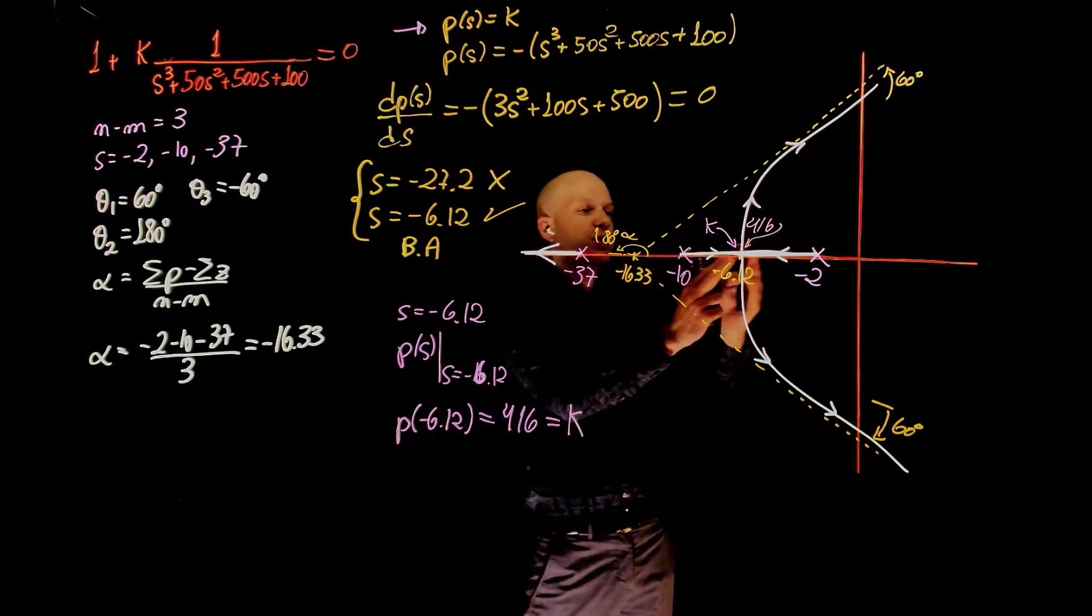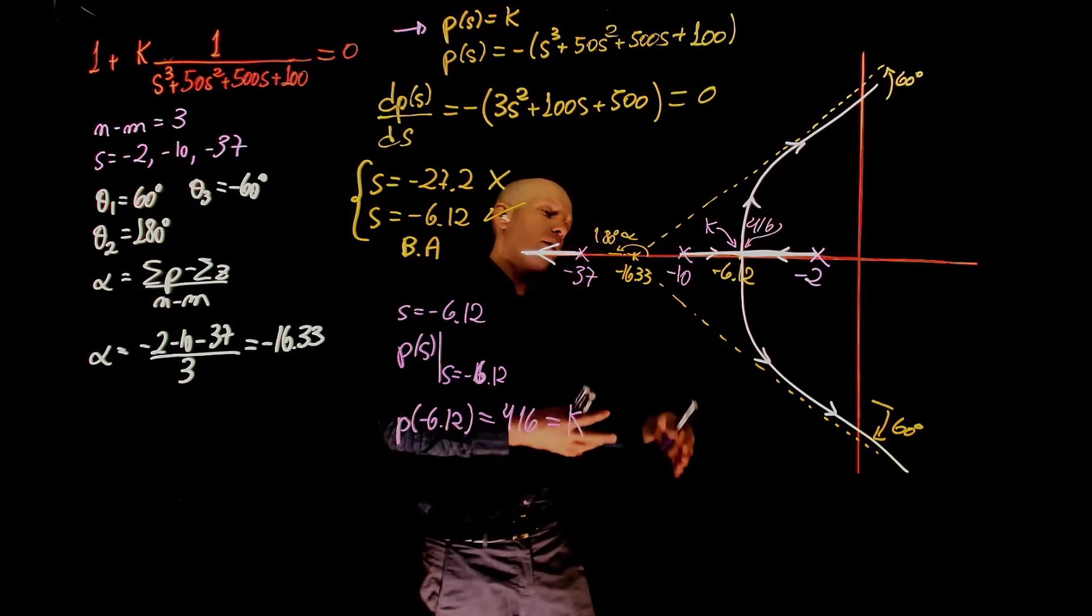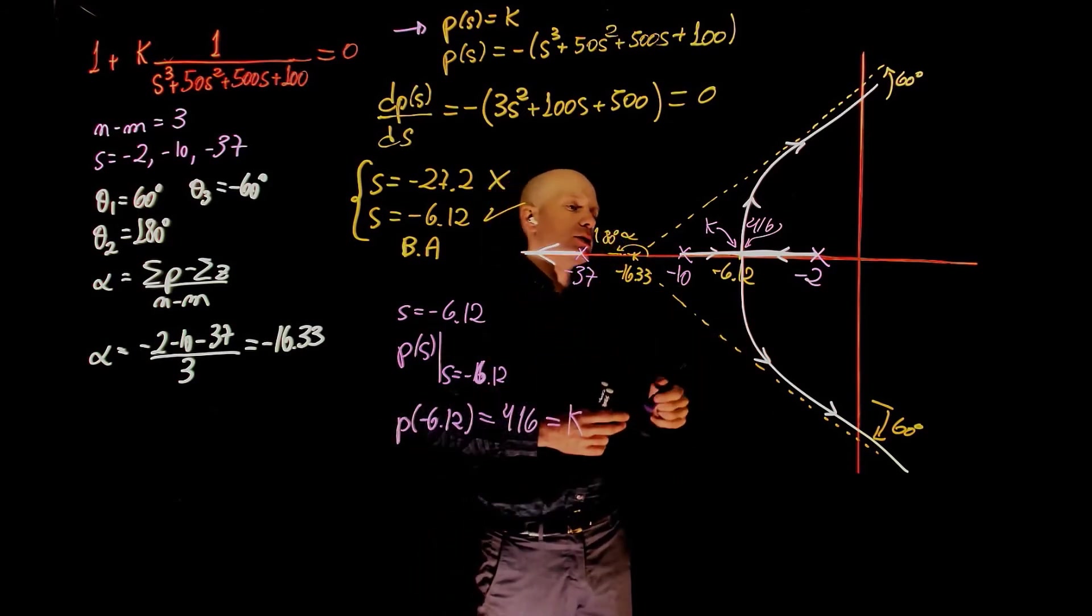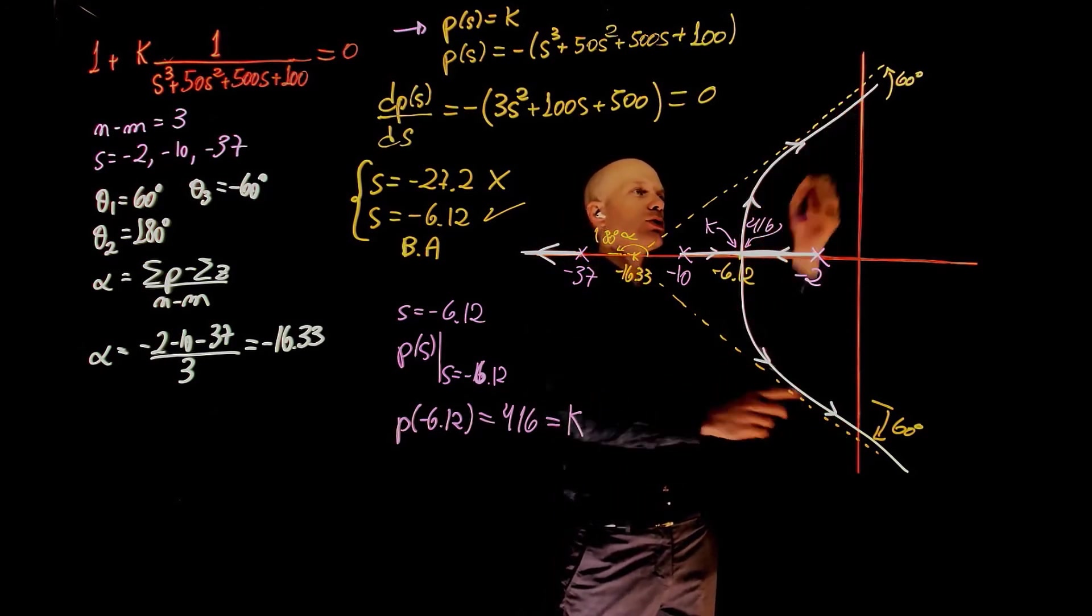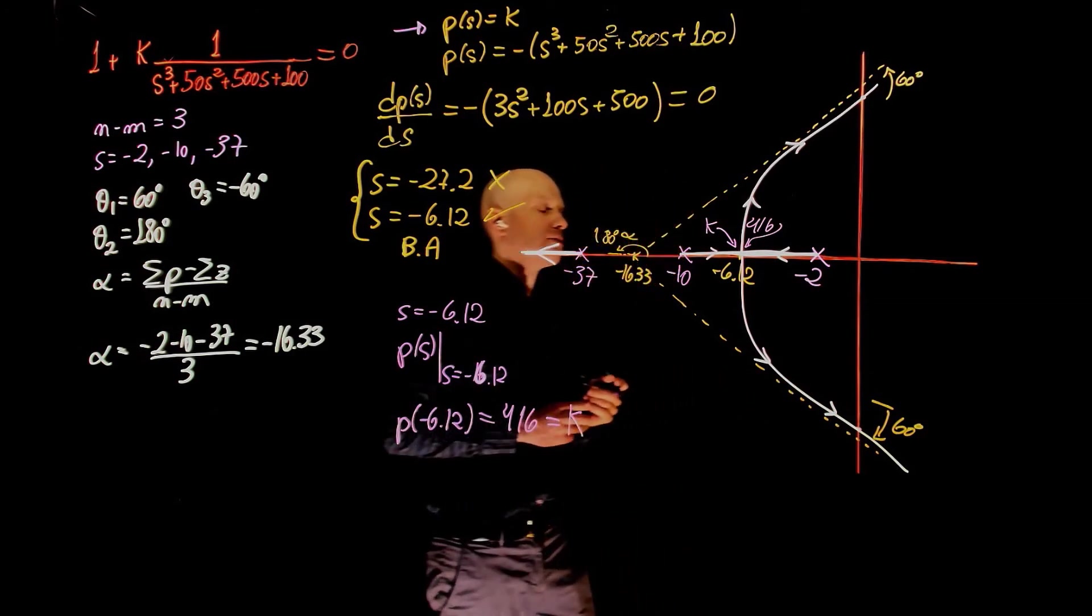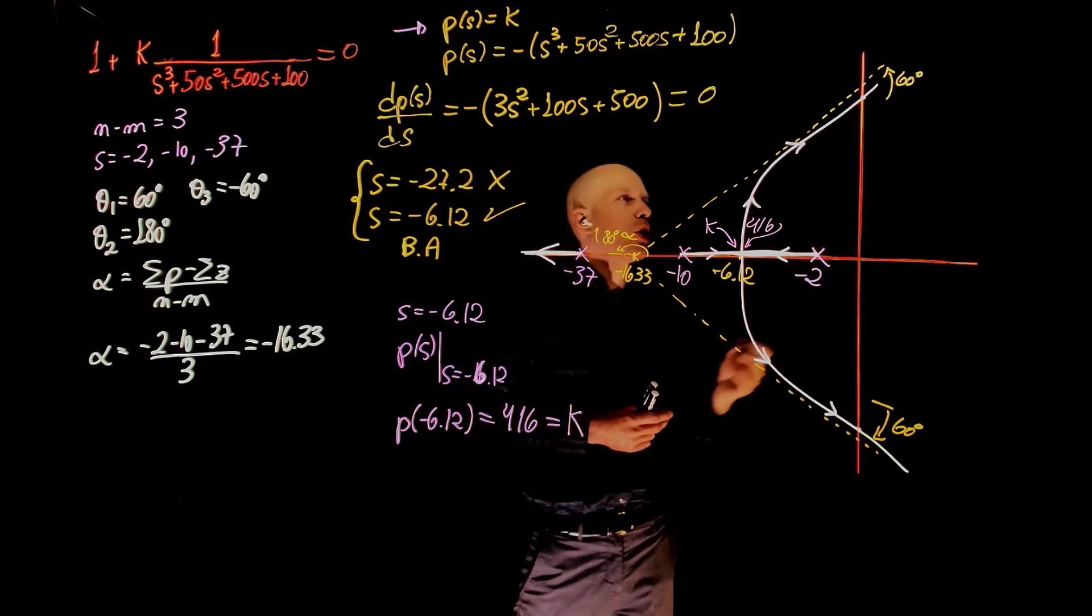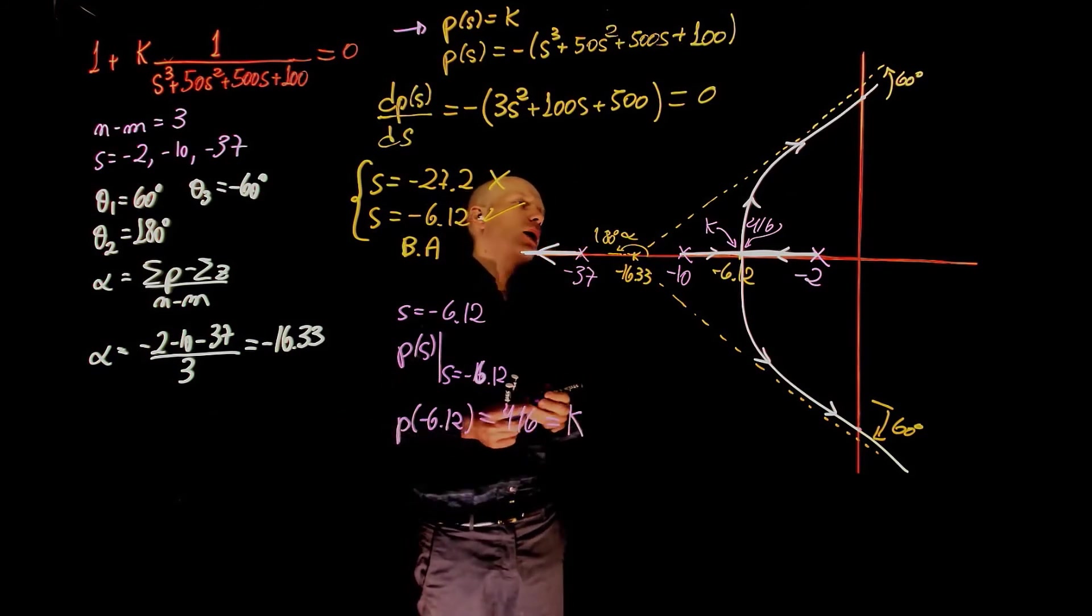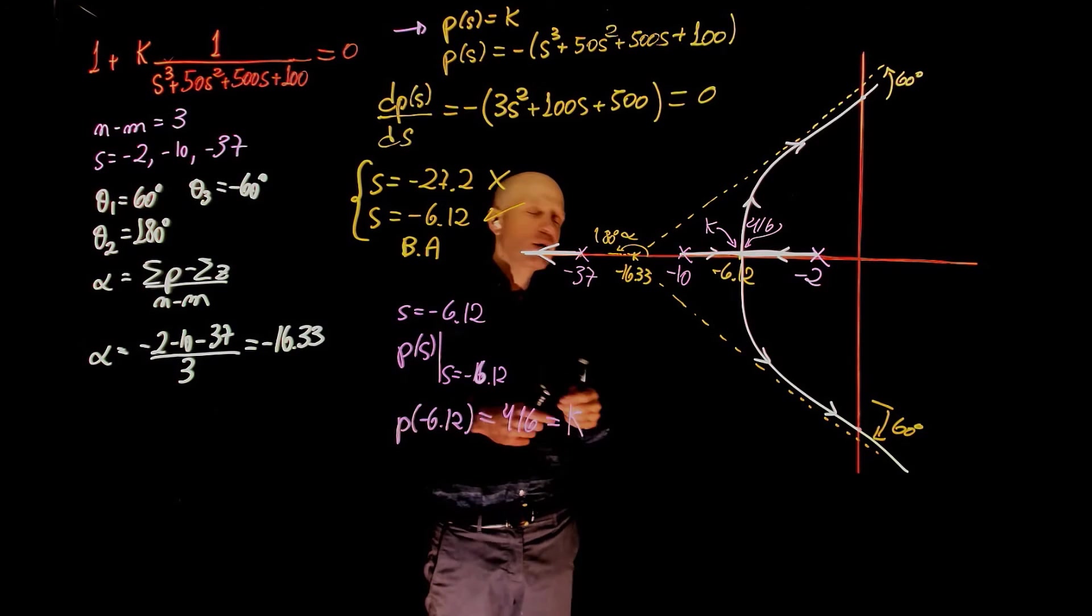Now past 416, these real poles become complex conjugate numbers, and the system transitions from an overdamped to an underdamped system. Now the poles are following the 60 degree asymptotes, and they may cross into the imaginary axis at these two points. What is the value of k at those two points? Well, this is not part of the problem, but we can calculate them just for amusement purposes using the Routh-Hurwitz stability criterion. Let's do that.